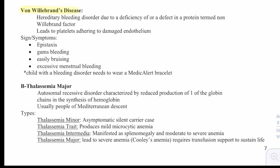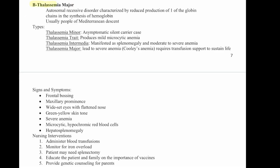Von Willebrand disease is another hereditary bleeding disorder due to a deficiency of or defect in the protein called von Willebrand factor. It leads to platelets not adhering properly to damaged endothelium. Signs include epistaxis, bleeding gums, easy bruising, and excessive menstrual bleeding. A child with a bleeding disorder needs to wear a medical alert bracelet.